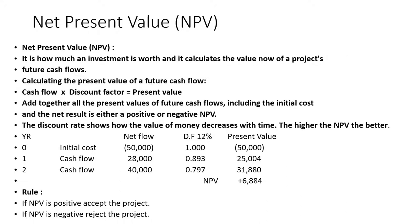Net Present Value, NPV — it is how much an investment is worth, and it calculates the value now of your project's future cash flows. Calculating the present value of your future cash flows: cash flow multiplied by discount factor equals present value. Add together all the present values of future cash flows including the initial cost, and the net result is either a positive or negative NPV.